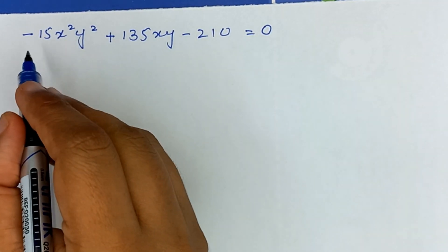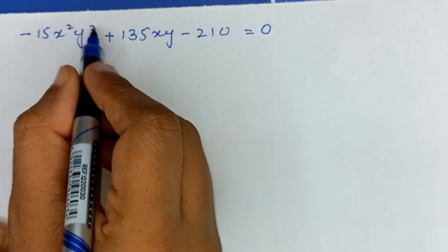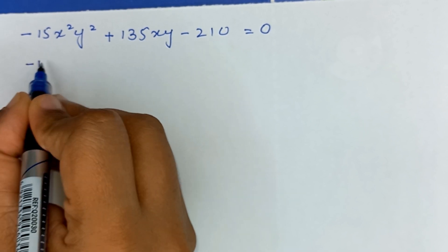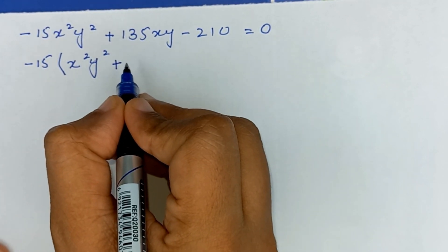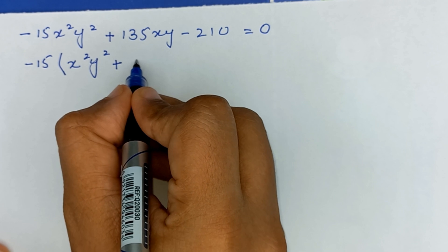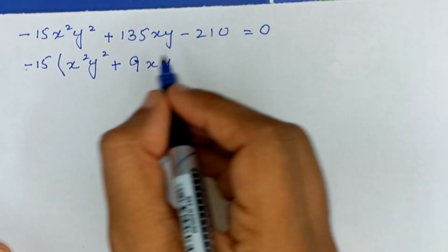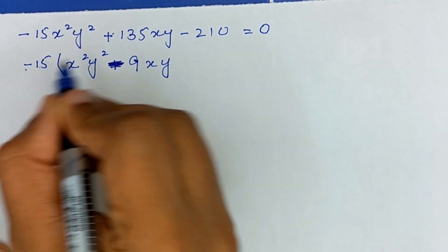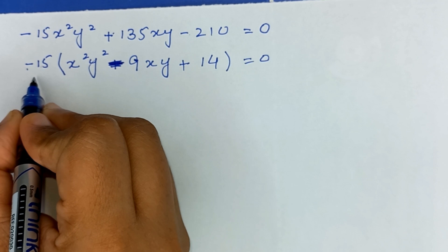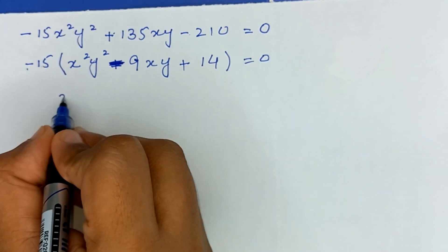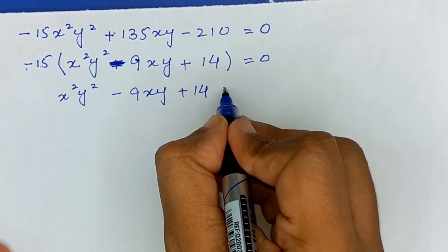Factoring out −15 to make the first term positive: −15(x²y² − 9xy + 14) = 0. Dividing both sides by −15 gives x²y² − 9xy + 14 = 0. This is a quadratic equation in terms of the product xy.